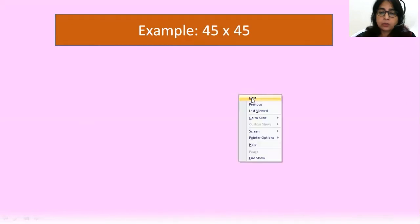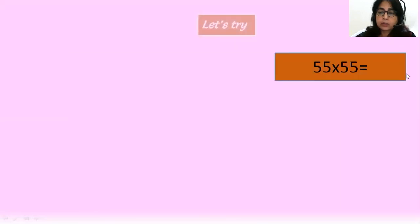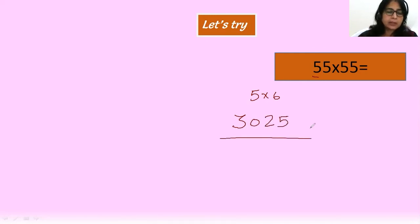I will solve you many questions for here. So that your concept should be clear. 55 into 55. Now, you can use your brain only. Do no need to write any steps. The successor of 5 is 6. So, 5 into 6. Simple. 30. And last, 25. 3025. In how many seconds? I think 2 or 3 seconds I have taken. So, when you will do the practice, you will also take 2 or 3 seconds only.